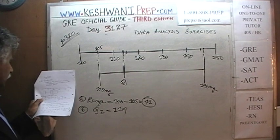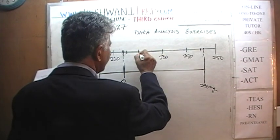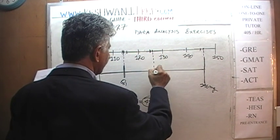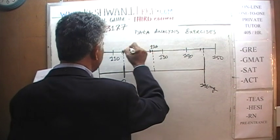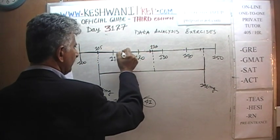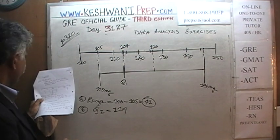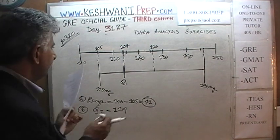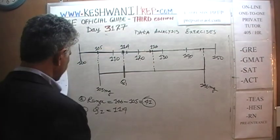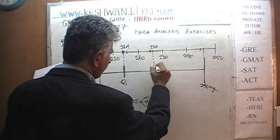Now we have to show the third quartile. The third quartile looks like it is 126. So this is 120, this is 130, this is 125 — so the third quartile is right here at 126. The first quartile was 114.